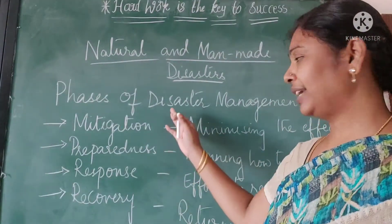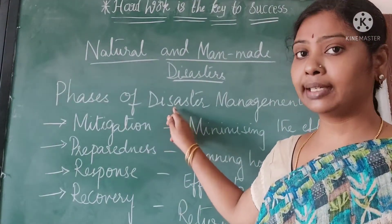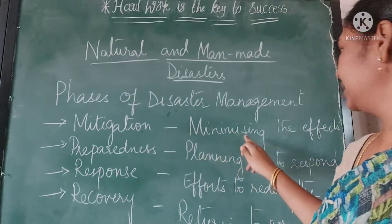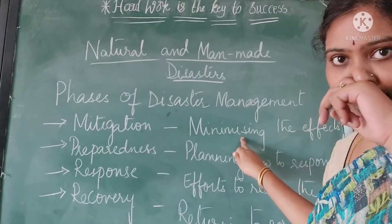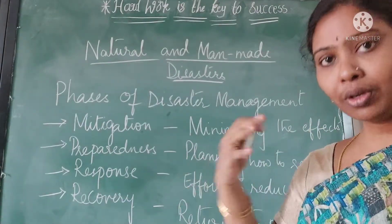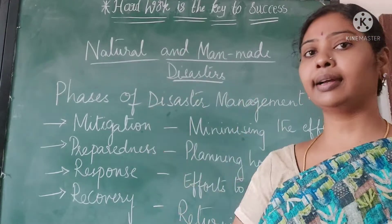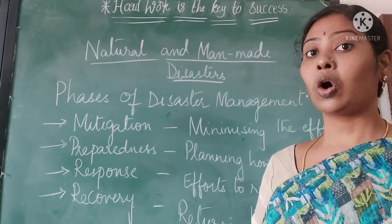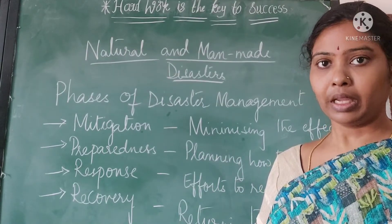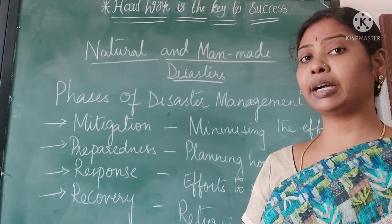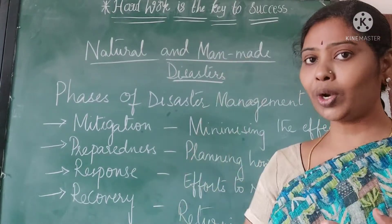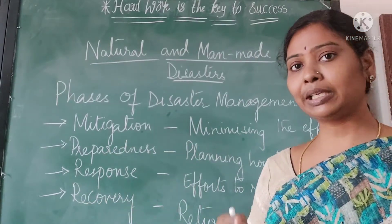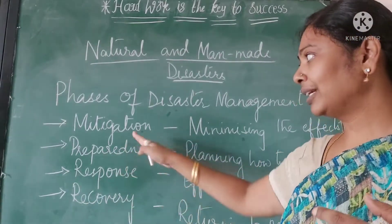Now these are the phases of disaster management — the steps involved. The first one is mitigation, that is minimizing the effects of a disaster. When we know that a disaster can occur, for example riots or floods, and if a place is in a low-lying area, we can evacuate the people to another place. That is mitigation — we can minimize the effects.